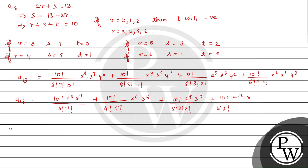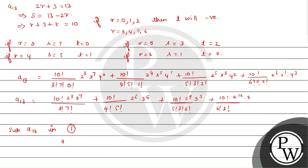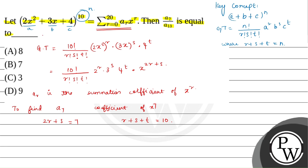Now substituting the value of a13 from equation 1, we can see that a7 = 2³ × a13. Therefore a7/a13 = 2³ = 8. This is the final answer. From the options we can say that option A is correct. Hope you understood the solution. Thank you bachcho.